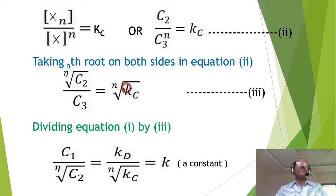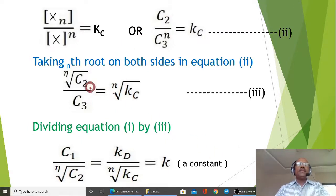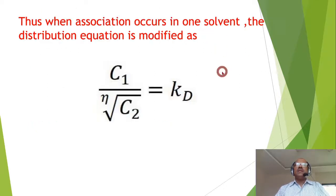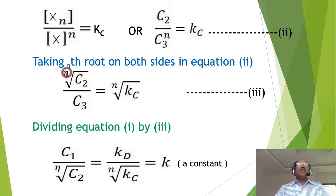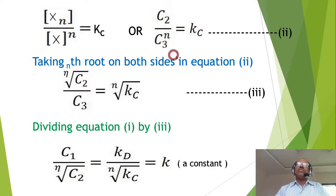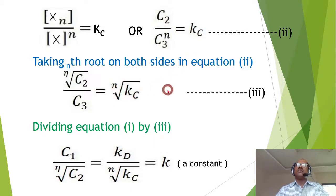The previous equation C1 upon C3 is equal to Kd is equation 1. Taking the nth root of equation 2, we get the nth root of C2 upon C3. By taking the nth root on both sides, C3 raised to N converts to C3, and the left side becomes nth root of C2. The Kc term converts to nth root of Kc. This is equation 3.